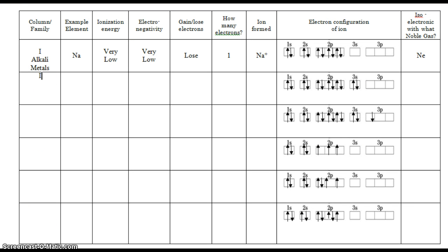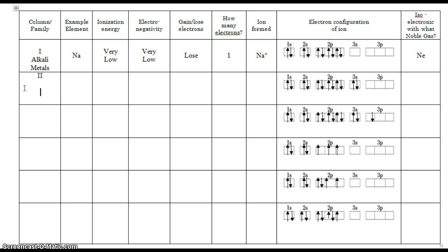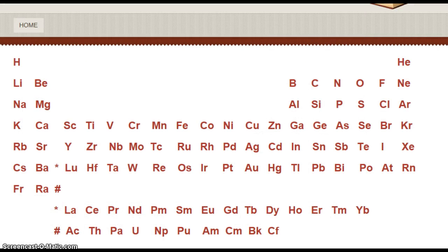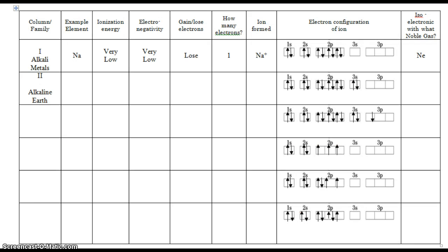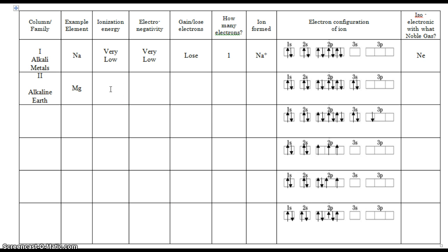What about the second column on the periodic table? That is called the alkaline earth metals. Let's take magnesium, which is right next to sodium. What's the difference between sodium and magnesium? Well, we've added an extra proton and we haven't added many more shielding electrons. So there is a little bit stronger force on the outer electron. It has a low ionization energy — not very low — and it also has a low electronegativity. So it is still going to lose electrons because the ionization energy is low.